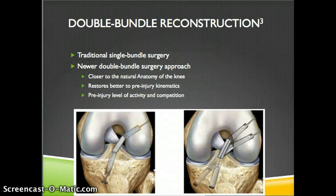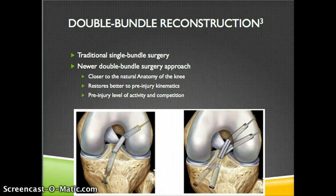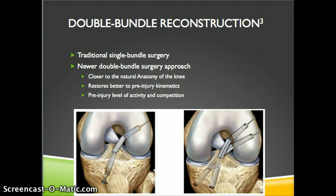The double-bundle reconstruction replaces the two natural anatomic bundles of the ACL — the anterior medial and the posterior lateral bundle. Traditional single-bundle surgery has allowed athletes to return to play; however, studies show pre-injury stability has not been fully regained post-operation. Single-bundle patients have also experienced osteoarthritis similar to a non-operated knee, suggesting it does not protect against degenerative changes. The double-bundle approach is becoming more popular as it is believed to better restore full pre-injury kinematics and activity level.